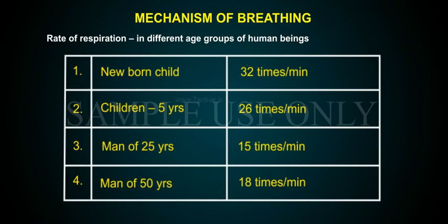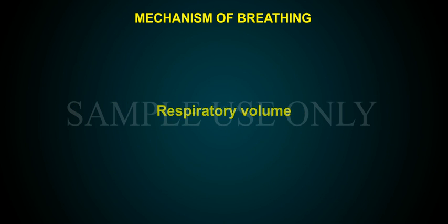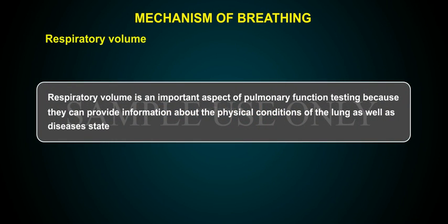Rate of respiration in different age groups: 1. Newborn child — 32 times per minute. 2. Children up to the age of 5 years — 26 times per minute. 3. Man of 25 years — 15 times per minute. 4. Man of 50 years — 18 times per minute. Respiratory volume is an important aspect of pulmonary function testing because it can provide information about the physical condition of the lungs as well as disease state.